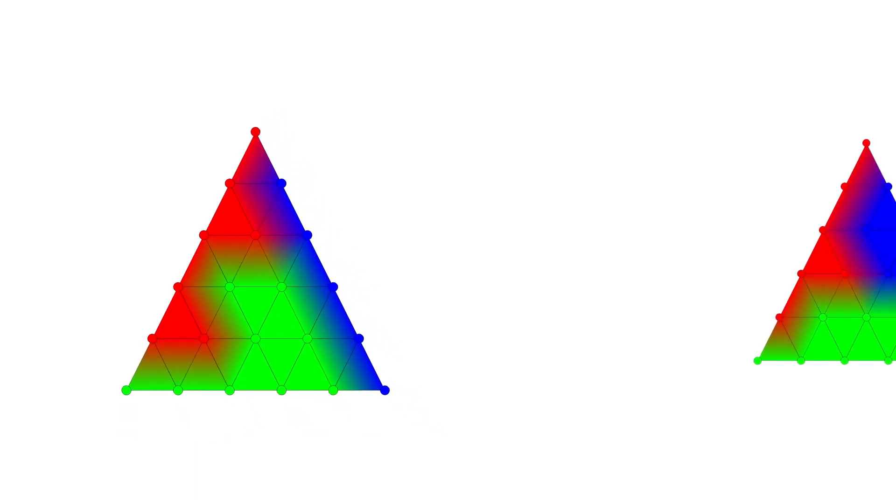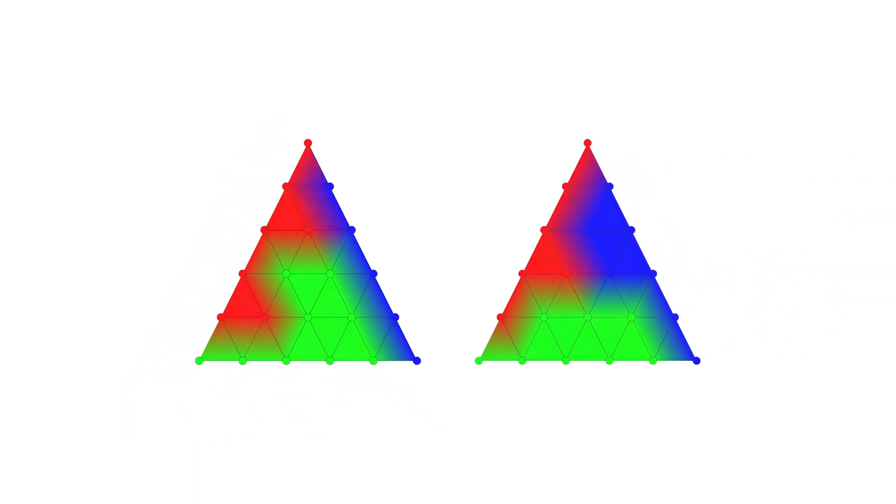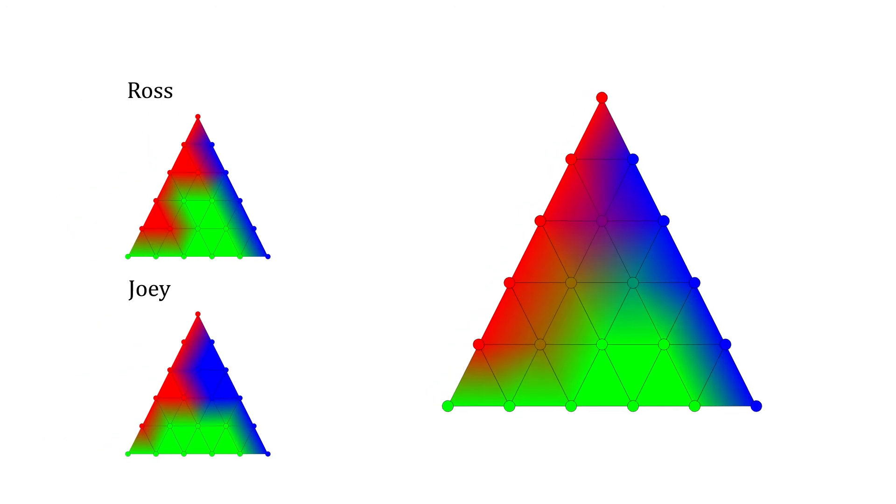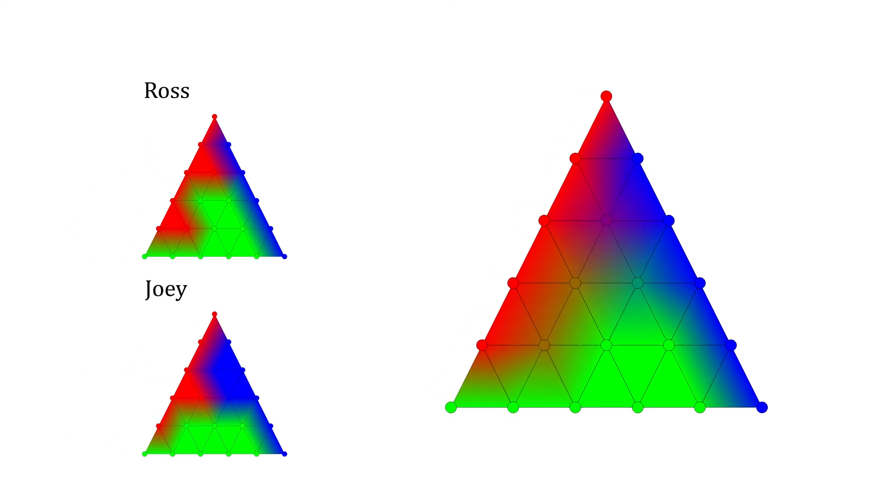Repeat this process for Joey. Now, let's merge these. We'll average the colors. The green vertices mean Ross and Joey both selected the green room at that price division. At the purple vertex, one selected blue and one red.